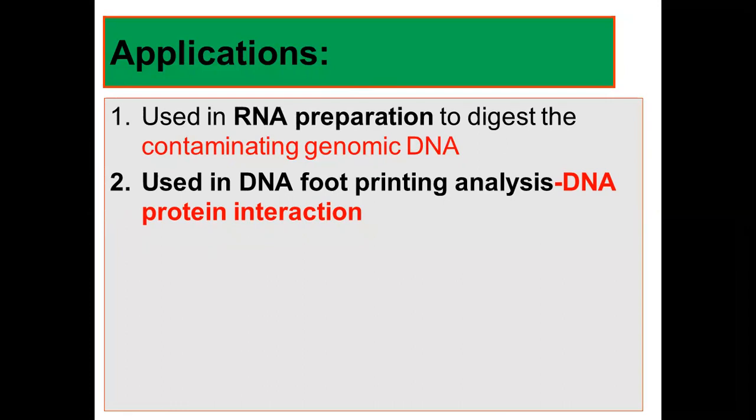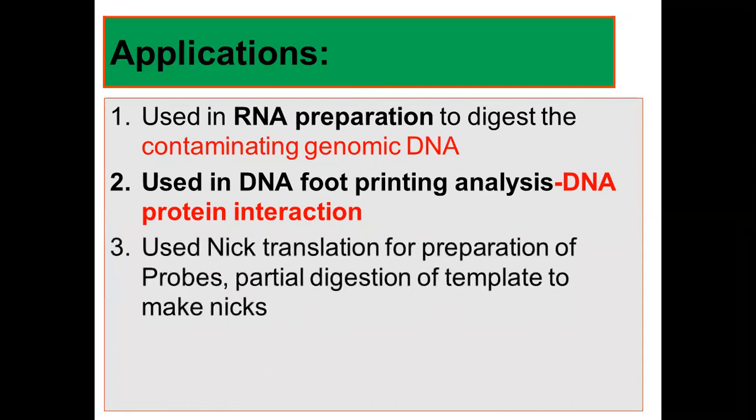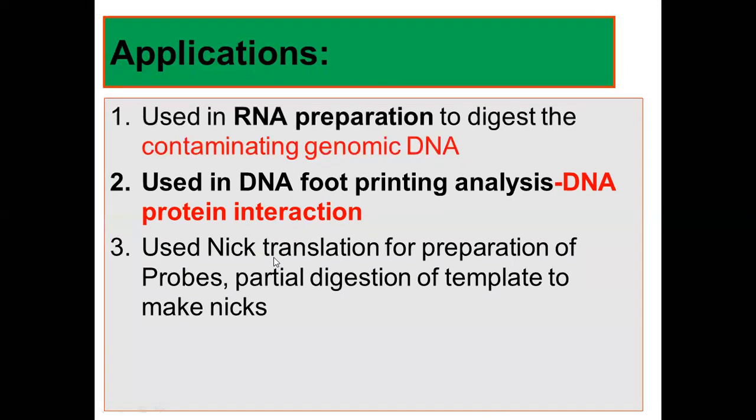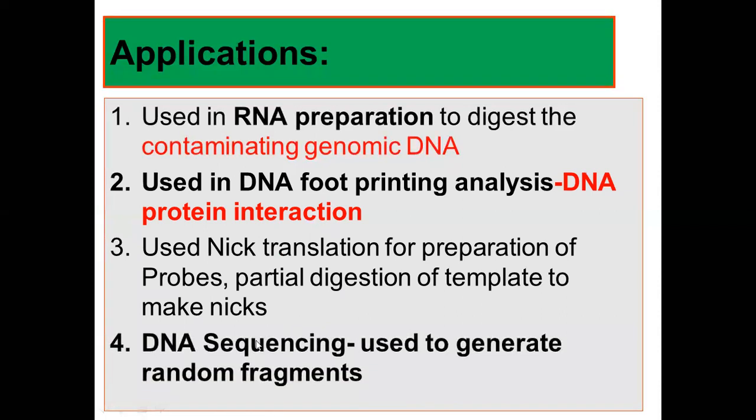In that, DNAase plays an important role. In preparation of probes through nick translation, DNAase I is used. The last one, even in DNA sequencing, it is used to generate random fragments with smaller size. Those fragments are ideal for DNA sequencing.